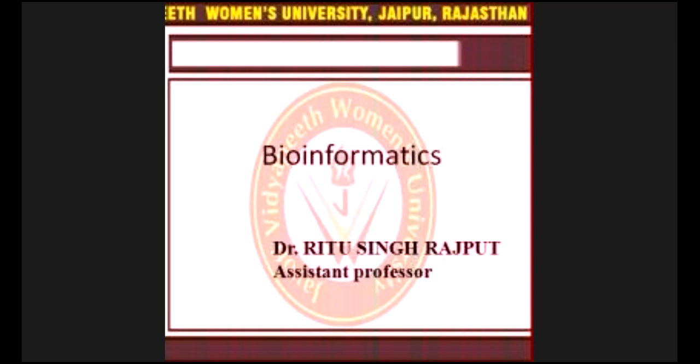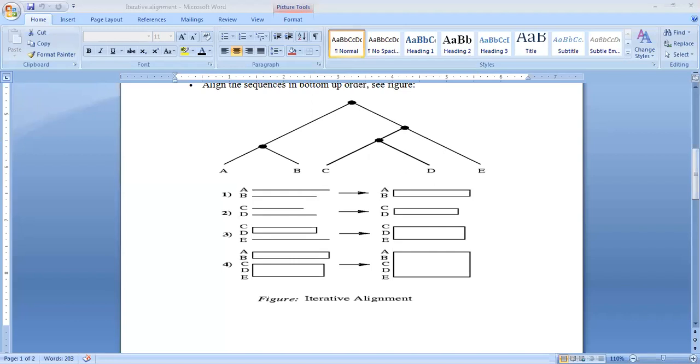Align the sequences in the bottom-up order. I can show you the figure. Here is a figure showing iterative alignment. You can see joining A, B and C, D, and then C, D, E, A, B, C, D, E.